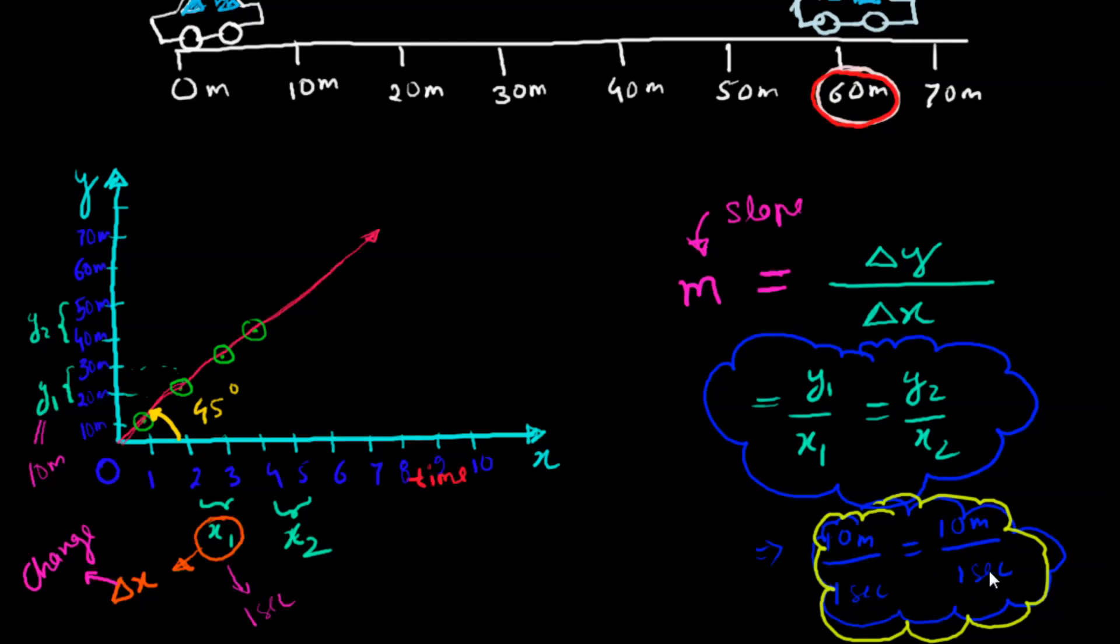10 meter divided by one second equals 10 meter per second. If I divide it, I will find the slope. In reality, slope is velocity or speed. We have completed our uniform motion. Let's start with the non-uniform motion.